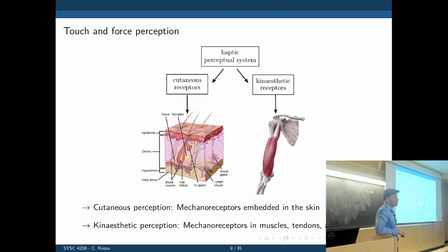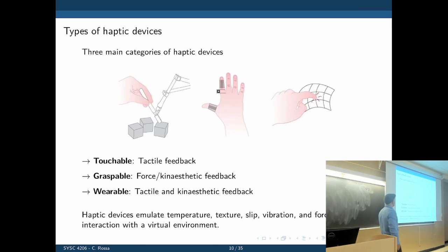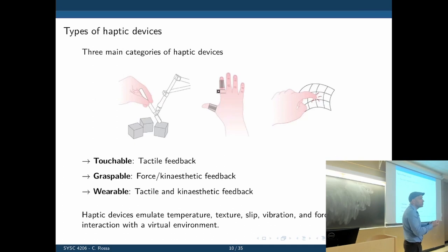We could use both — one to recreate the sense of touching, the other to recreate the forces you would perceive from interacting with a given environment. There are three main categories of haptic devices. The first is the touchable type, the same as in your cell phone — you touch it and feel some sort of vibration or feedback. It could also include temperature.